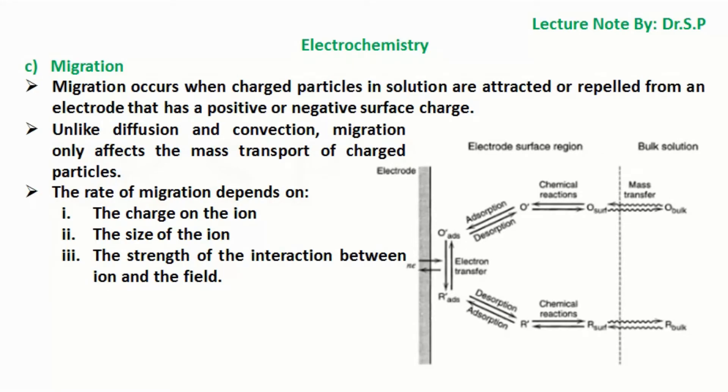Unlike diffusion and convection, migration only affects the mass transport of charged particles. The rate of migration depends on the charge on the ion, the size of the ion, and the strength of the interaction between ion and the field.